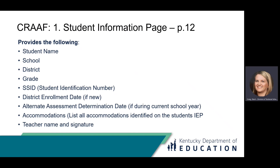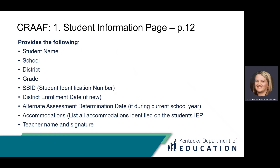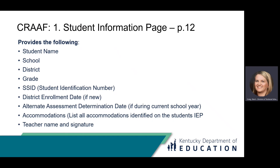The Student Information page form is stored in the Student Information section. Form components include student name, school, district, grade, state student identification number (SSID), district enrollment date if the student is new to the district, date participation in the alternate assessment was determined if placement occurred during the current school year, accommodations listed in the current IEP for the student, and the name and signature of the supervising teacher. A link to the KDE alternate assessment and accountability folder webpage — where the Student Information page can be found — is provided on page 13 of the Administration Guide. There are two versions: one electronic version and another that is a downloadable form to save.